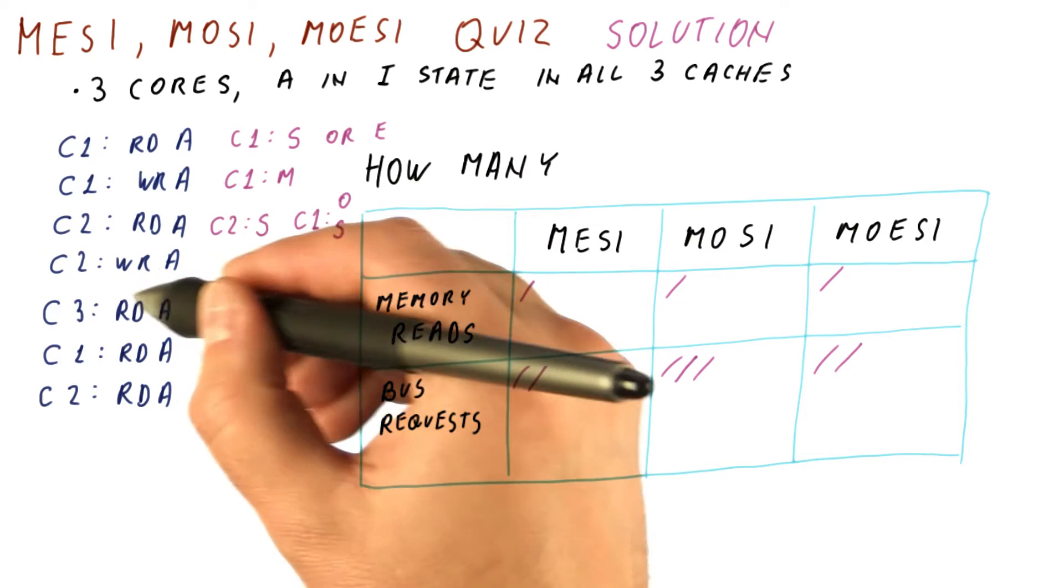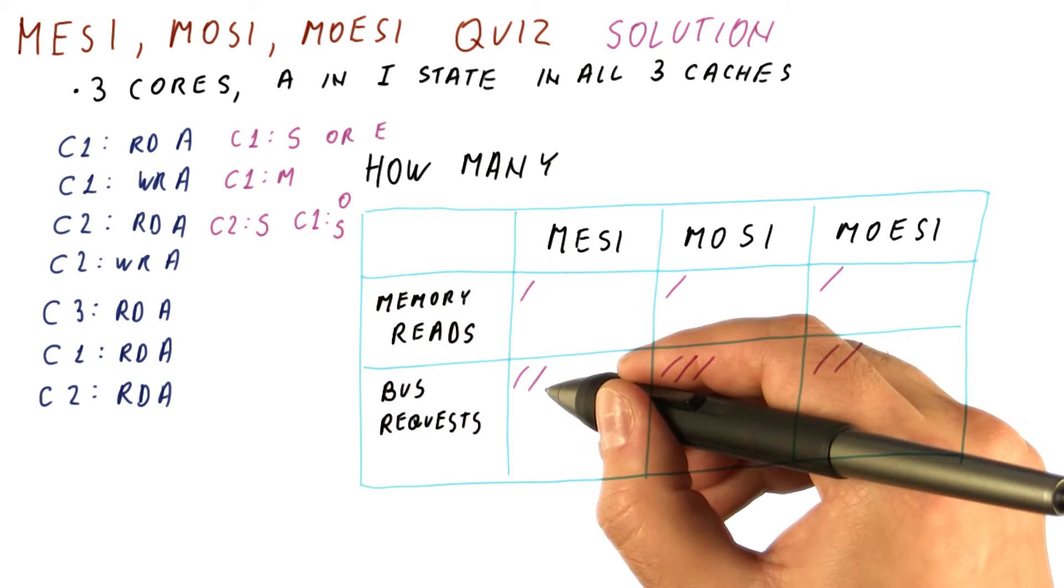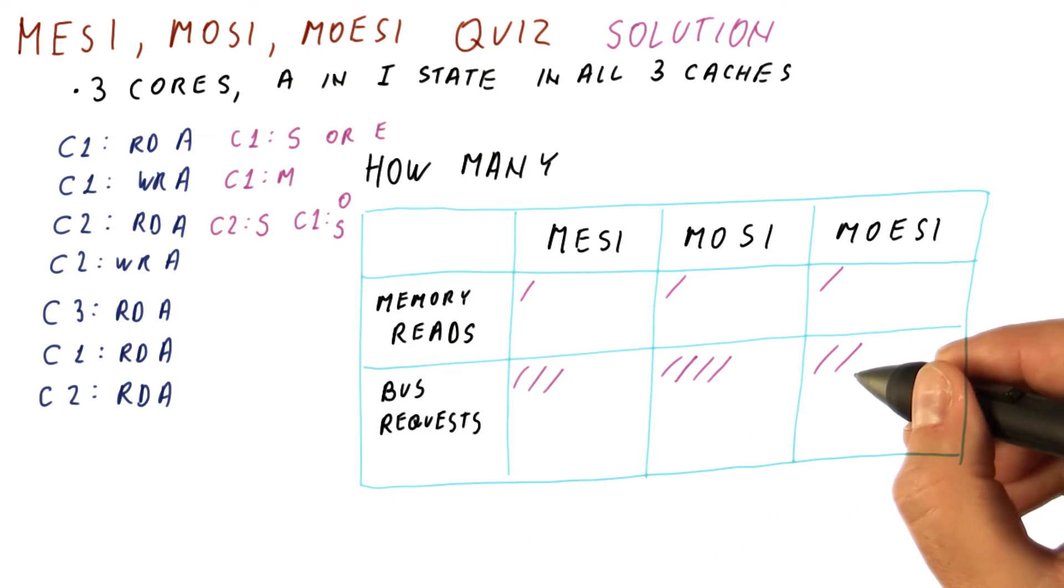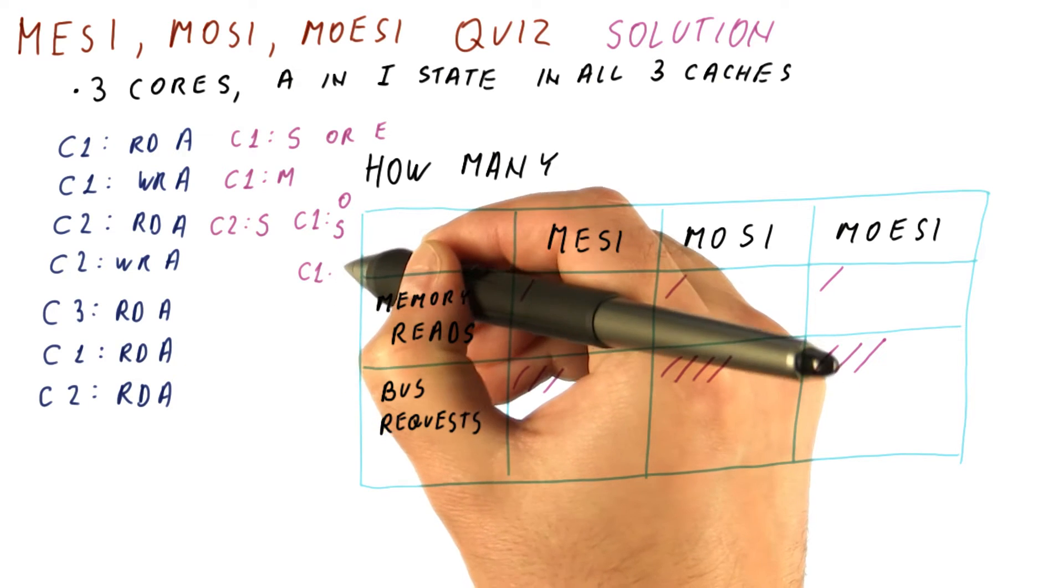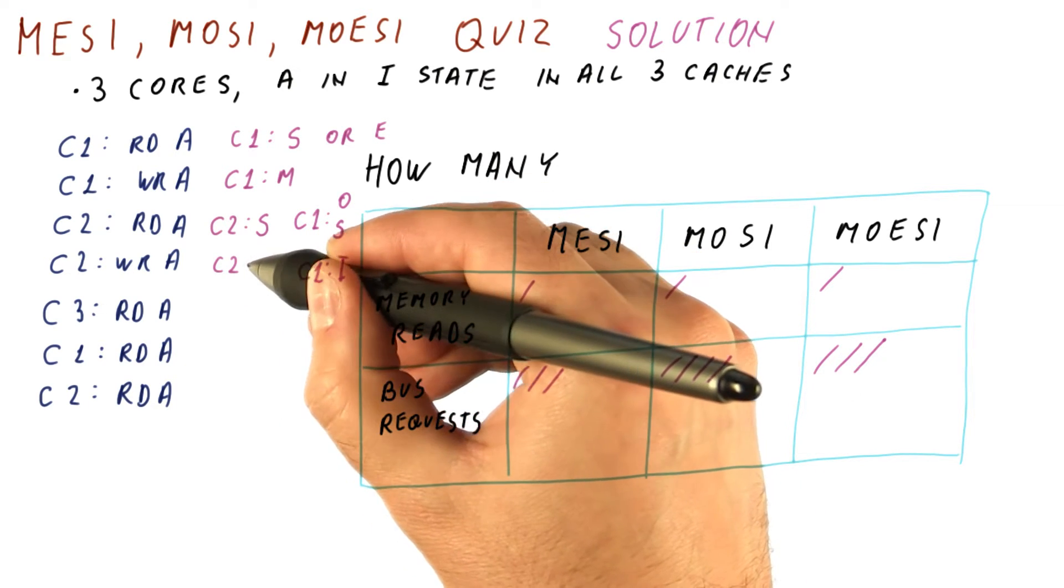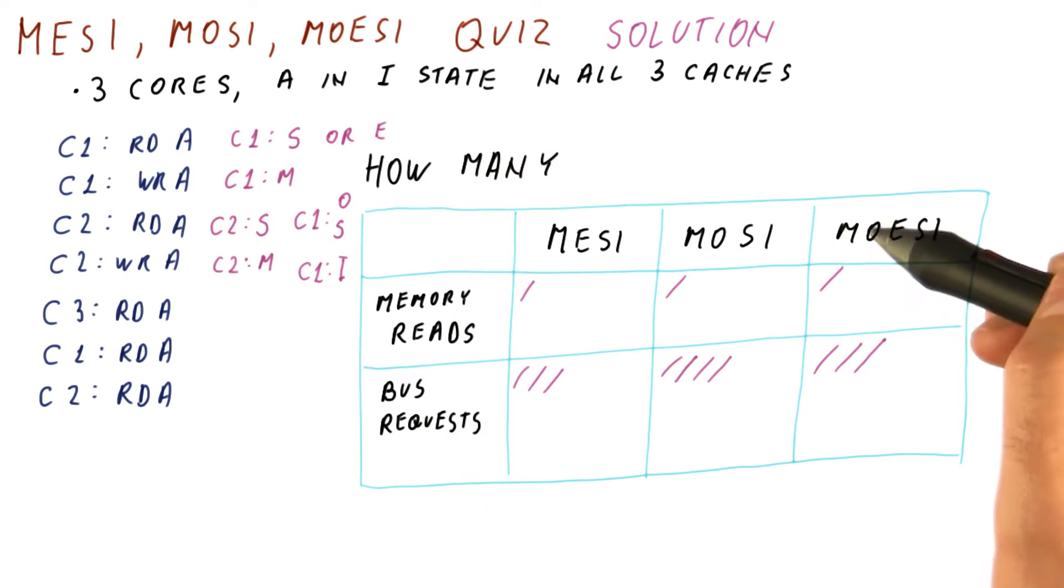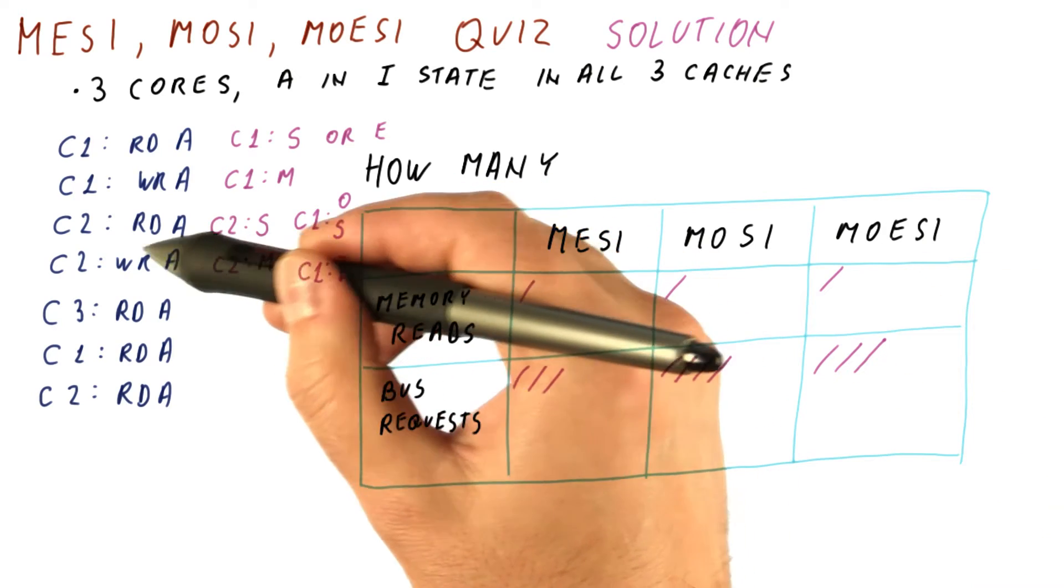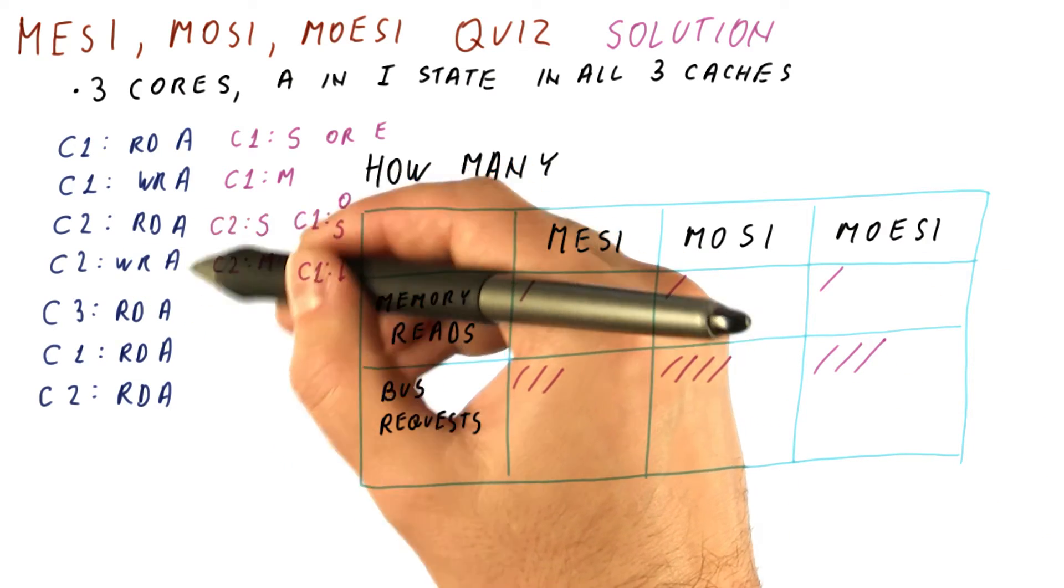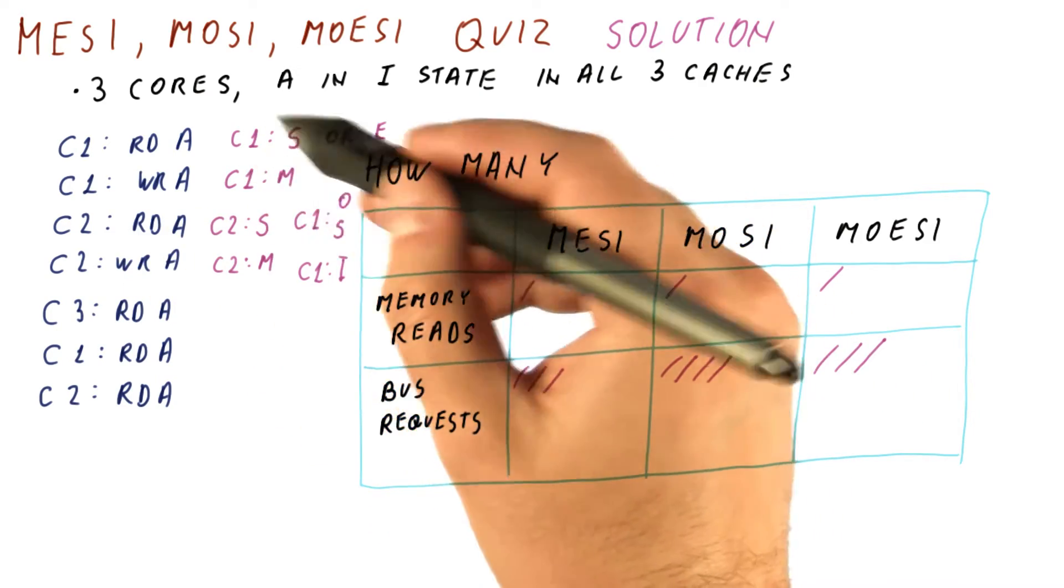Now when C2 writes to the block, because it has the block in the shared state, there will be a bus request to send out an invalidation. Either way, C1 now has the block in the invalid state, and C2 has the block in the modified state. So from this read to this write, having the exclusive state didn't help us save an access on the write. And that's because here we had no exclusive access to the block anymore. C1 also had the block.